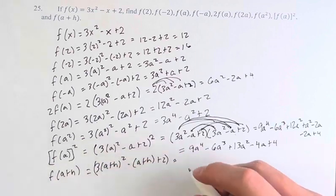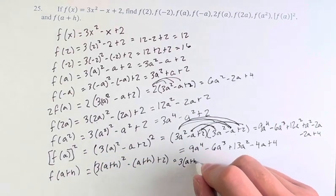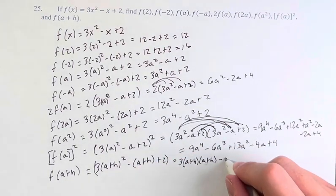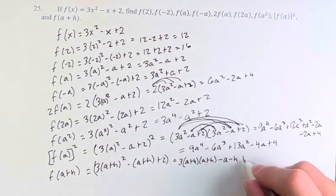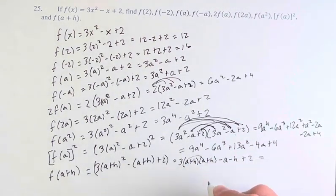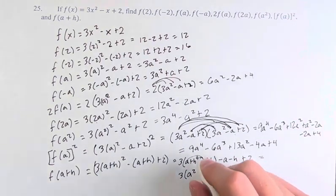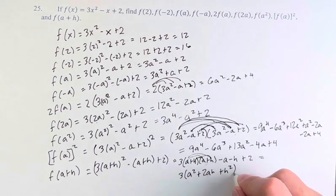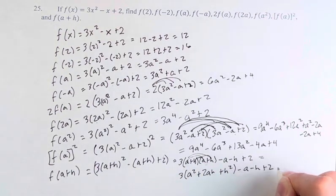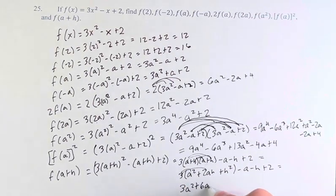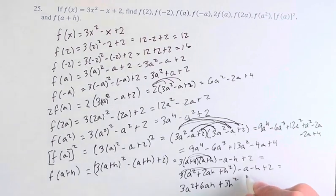Here we have 3 times a plus h squared, so a plus h times a plus h, minus a plus h, just distribute that negative, minus a minus h, and then plus 2. Now we just have to simplify this. We have 3 times a squared plus a h plus another a h is plus 2a h, plus h squared minus a minus h plus 2. This distributing 3a squared plus 6a h plus 3h squared minus a minus h plus 2.